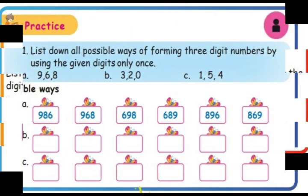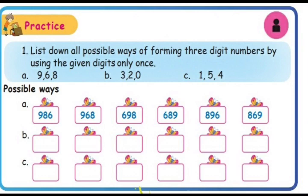Now for practice, using the digits 9, 6, and 8, we form three-digit numbers. Keeping 9 as the first digit: 9 8 6 or 9 6 8. Keeping 6 as the first digit: 6 9 8 or 6 8 9. Keeping 8 as the first digit: 8 9 6 or 8 6 9.